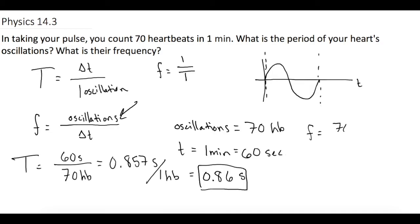So here now we have 70 heartbeats or oscillations, and we have that in 60 seconds, which gives us 1.167. And what is that? Heartbeats per second, or 1.2 hertz.